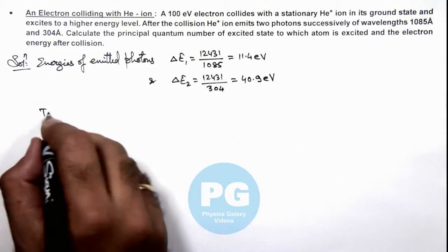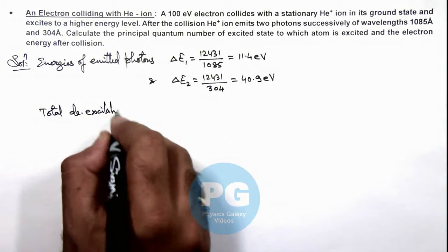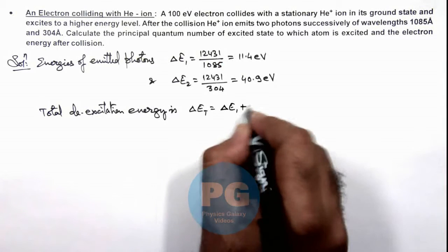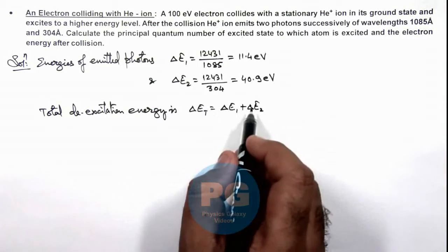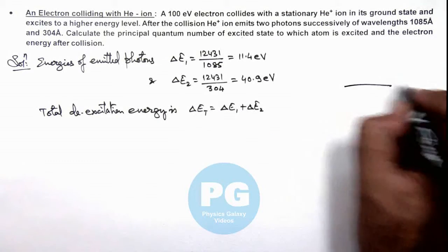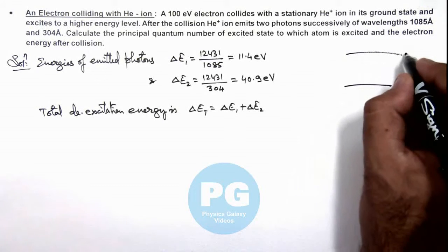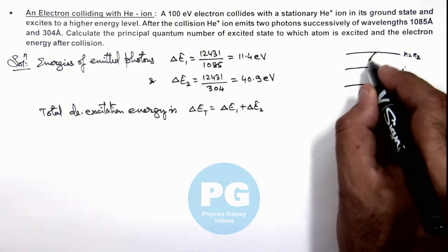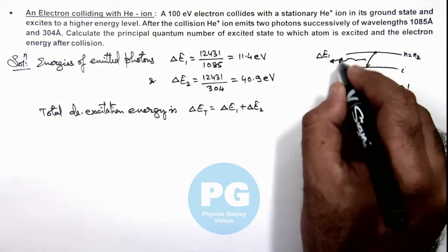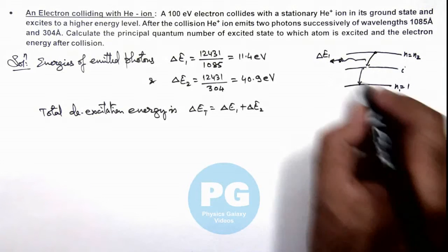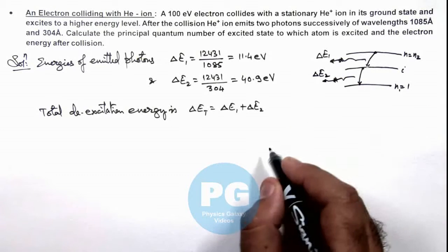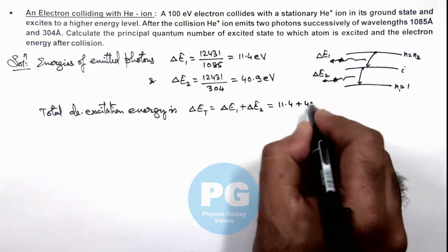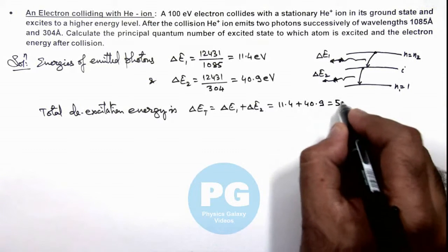The total de-excitation energy is delta E1 plus delta E2. The electron emits this energy coming back from the nth state to n equal to 1. If n equal to 1 is the ground state and n2 is the higher excited state, there is some intermediate state i. When it transits from n2 to i it emits a delta E1 photon, and from i to n equal to 1 it emits delta E2. So the total energy difference from n2 to n equal to 1 is 11.4 plus 40.9, which equals 52.3 electron volt.